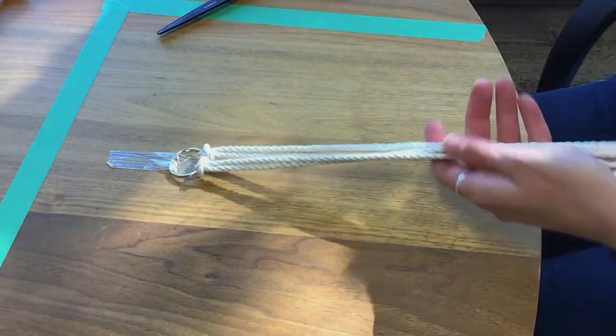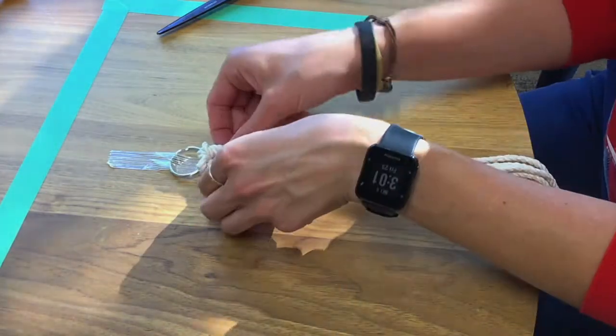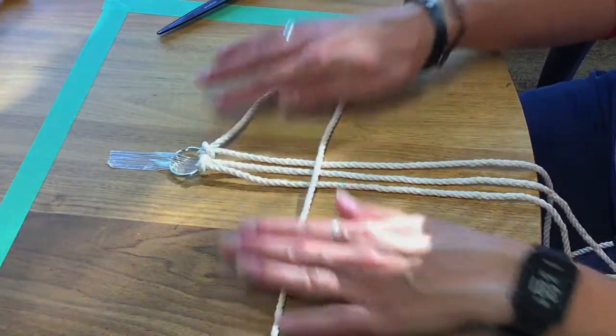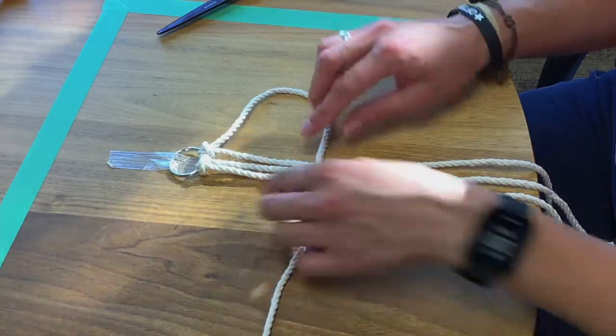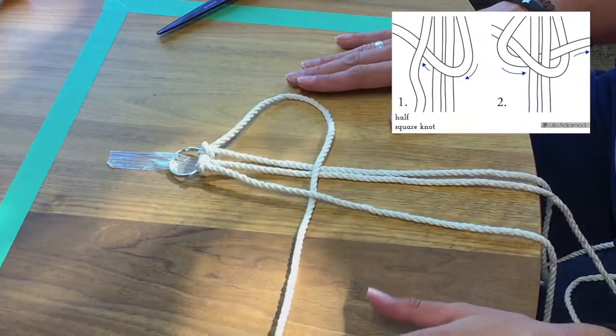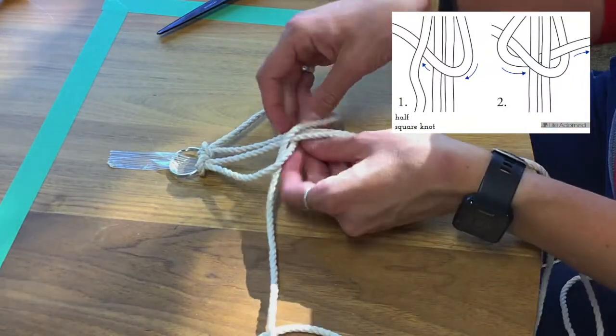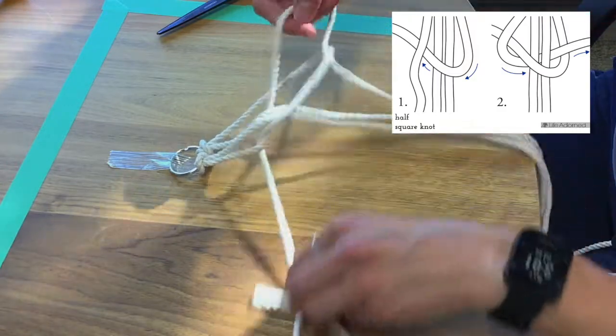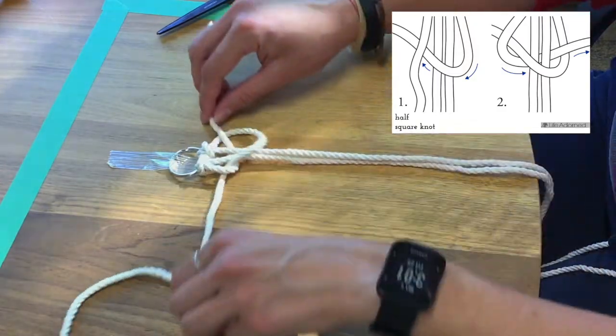So you should have four strands of rope hanging from your jump ring. We are going to be working from the two side pieces of rope, left or right. So you are going to loop over across and then loop over and then loop under. Pulling it tight.